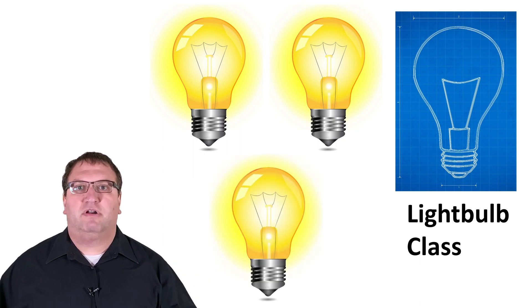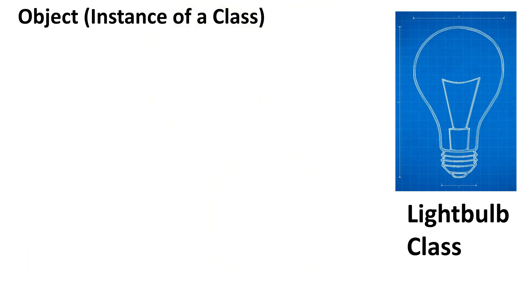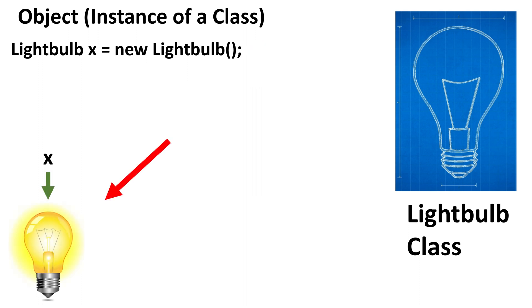Now that we've covered classes and objects conceptually, let's learn how to create objects with code. Here's how we can create an object from the lightbulb class. We start by stating the name of the class, in this case lightbulb, then a variable, in this case x, followed by equals new lightbulb, open close parentheses, semicolon. What we did is created a variable called x of type lightbulb and told it to point at a newly created lightbulb object.